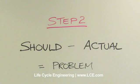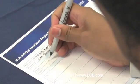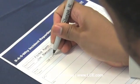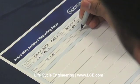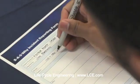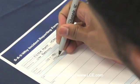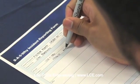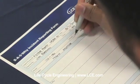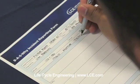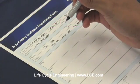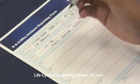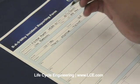Step 2 is to take note of the problem as indicated by the difference between the should and the actual. Step 3 is to ask why the defect or problem is occurring and write the answer down below the problem definition.